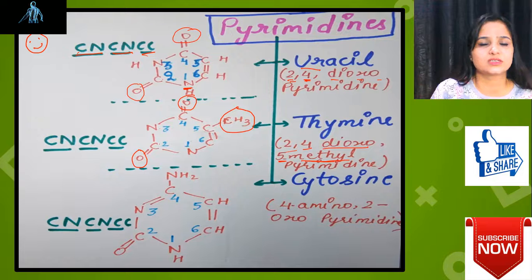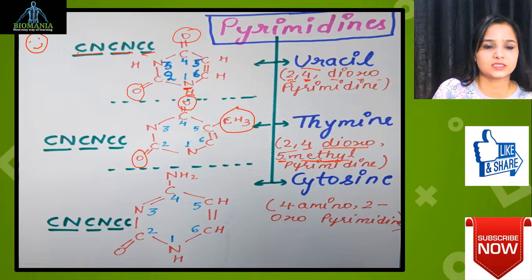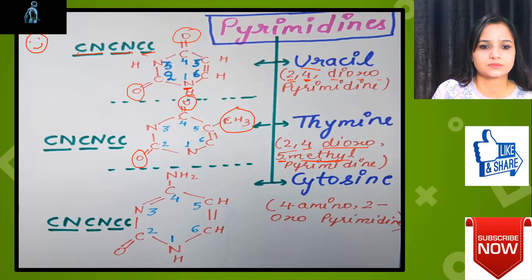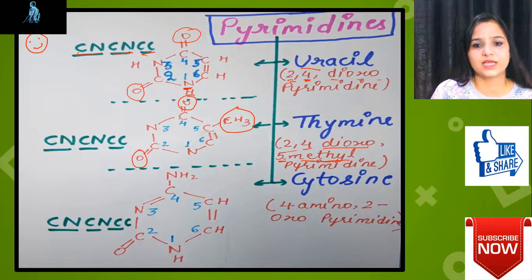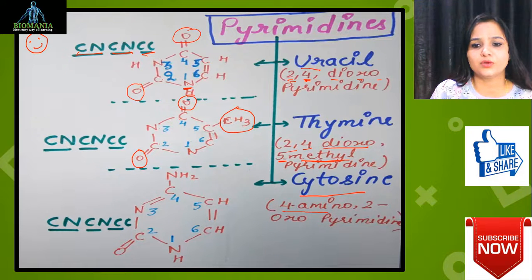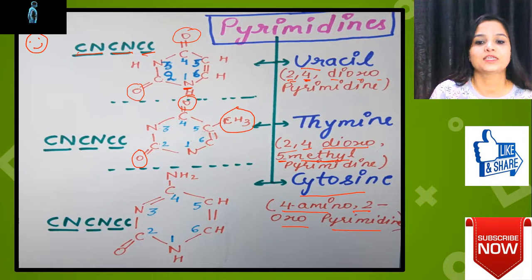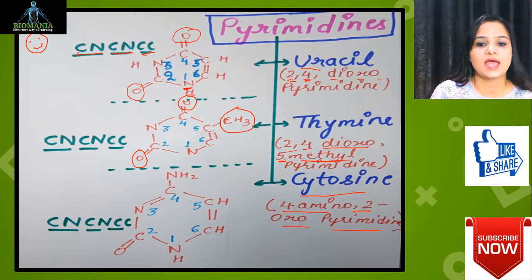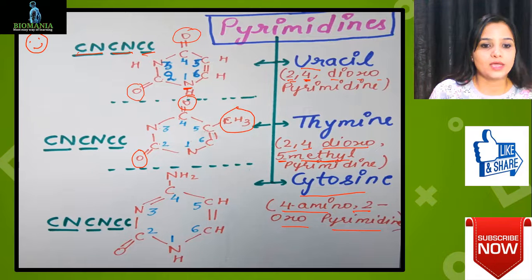The main frame structure is the same in all three cases — uracil, thymine, and cytosine. Now coming to the last one, cytosine, also known as 4-amino-2-oxopyrimidine. That means an amino group is present on the fourth position and an oxo group on the second position.